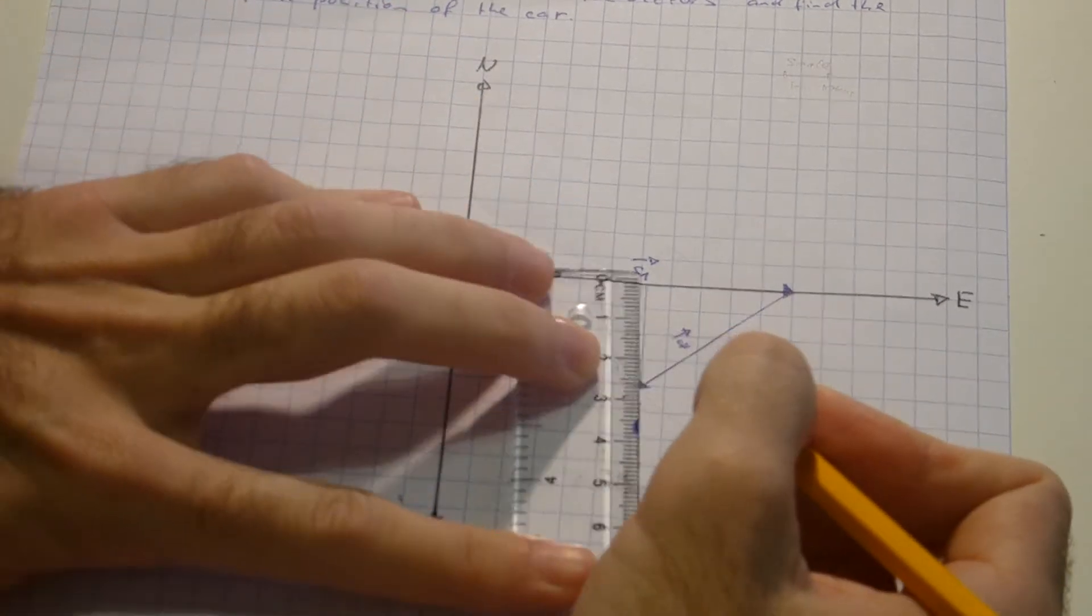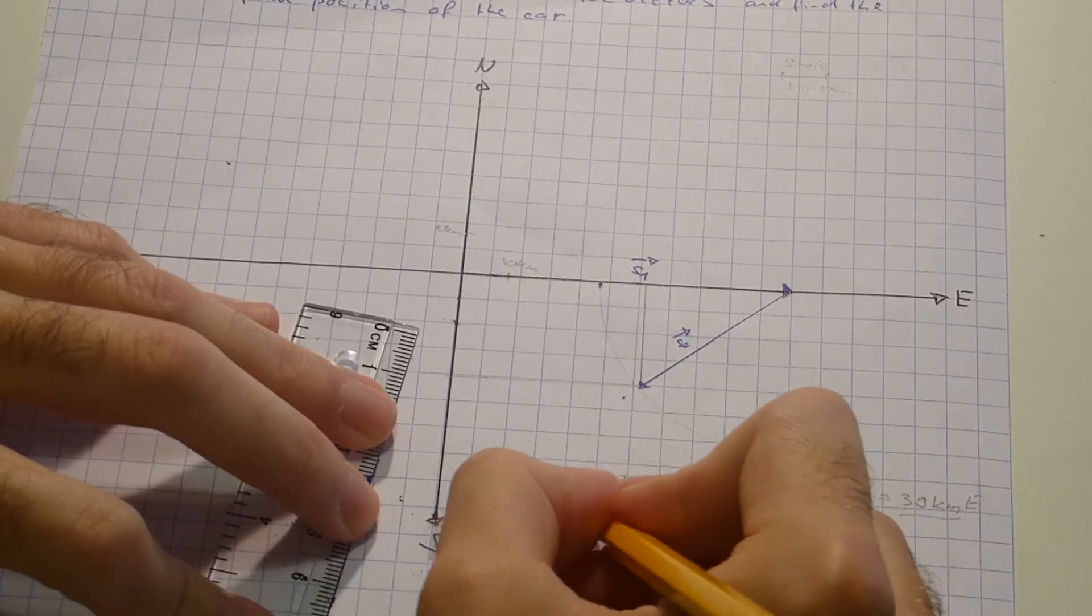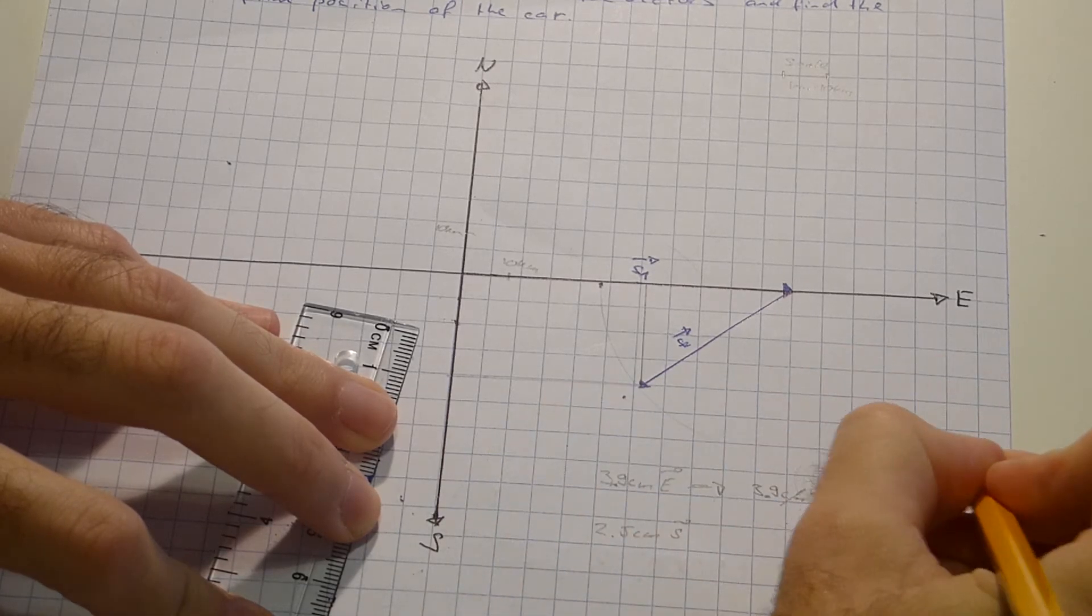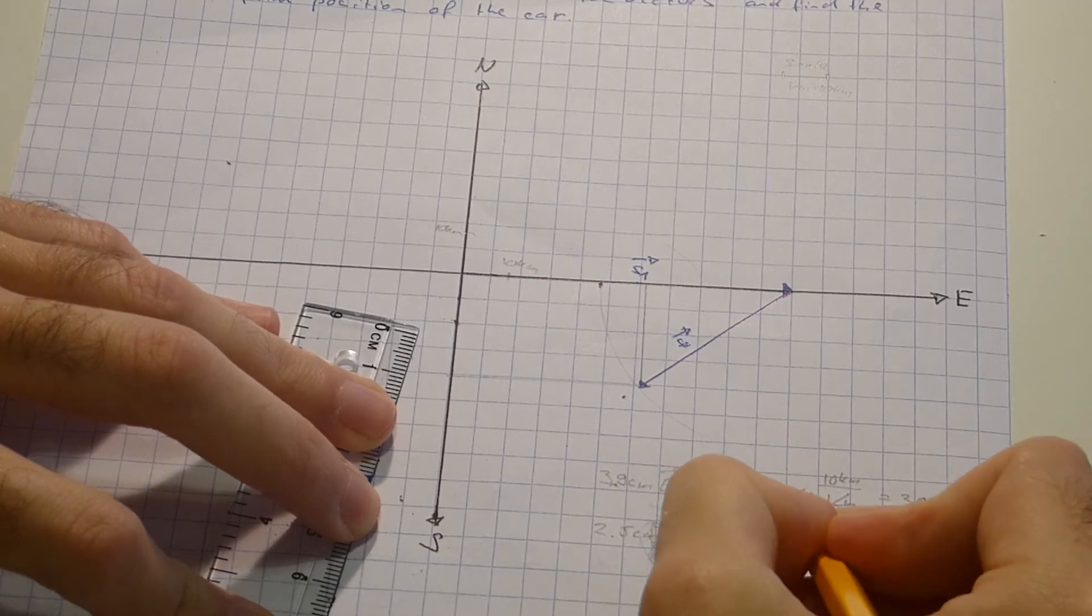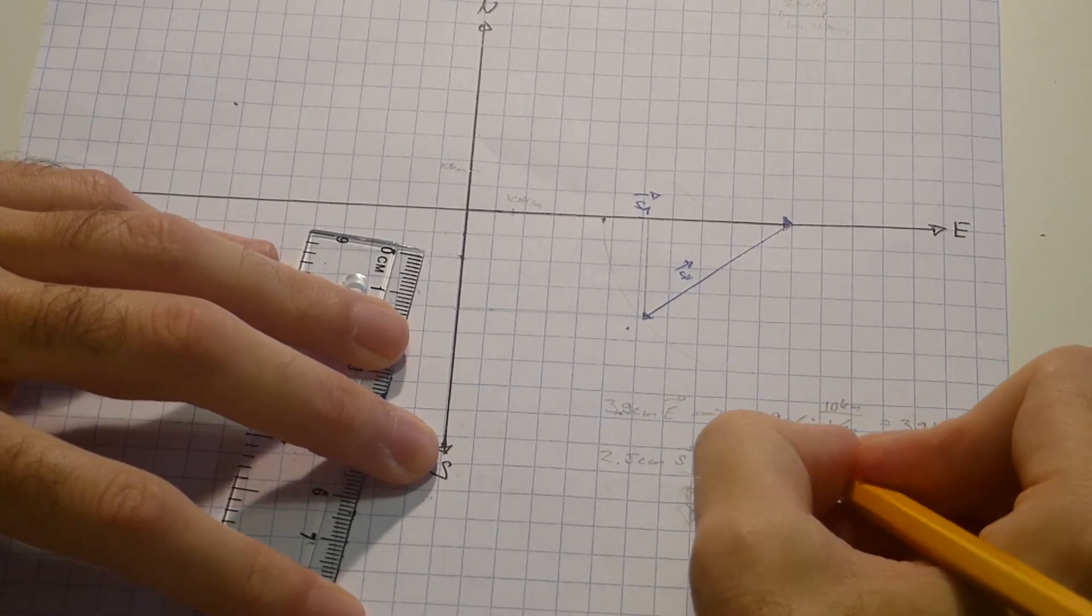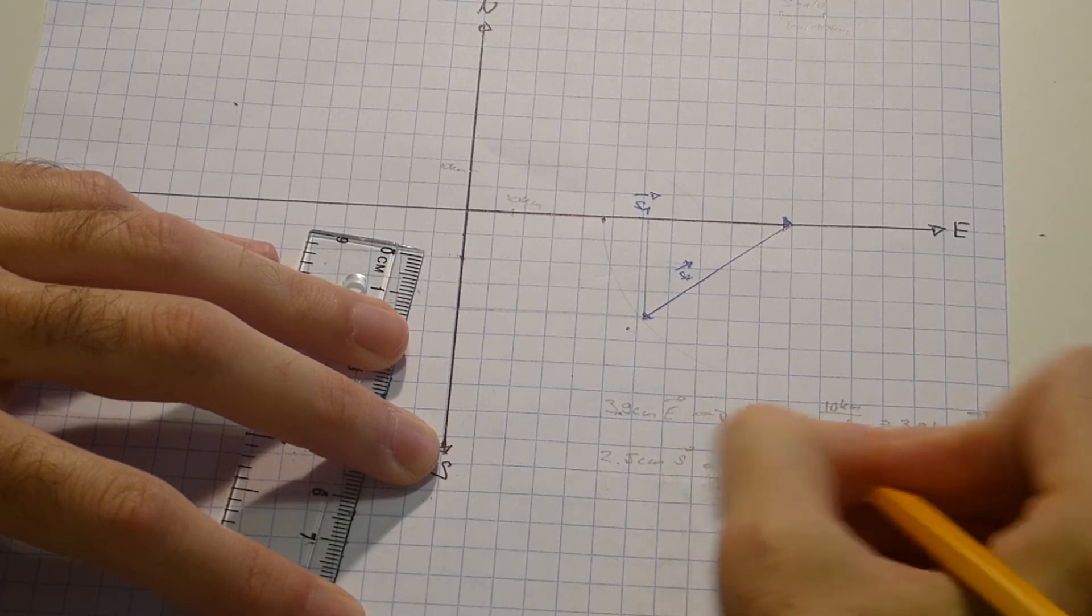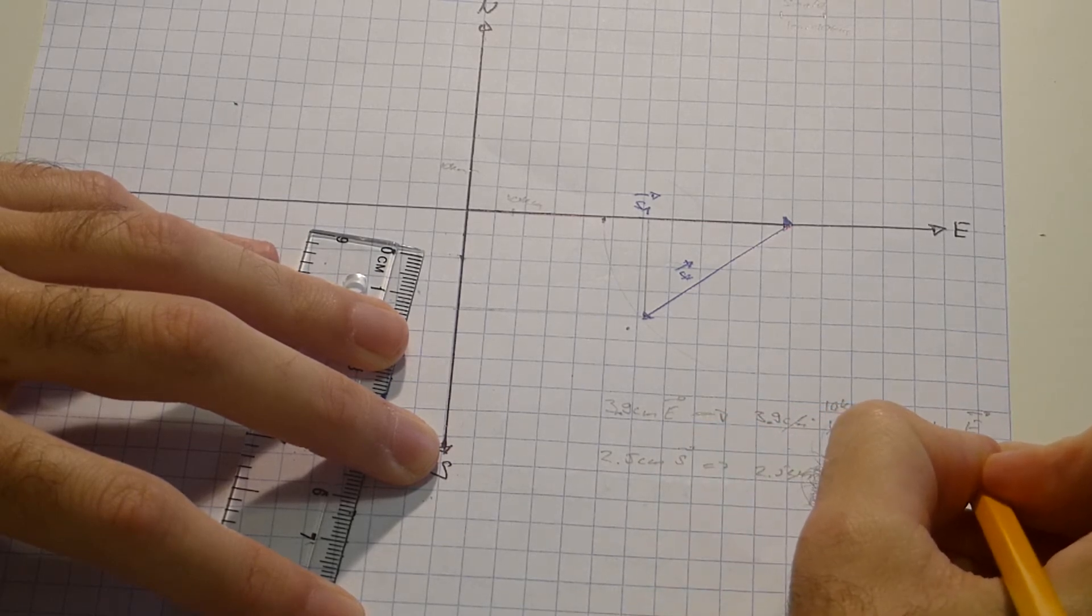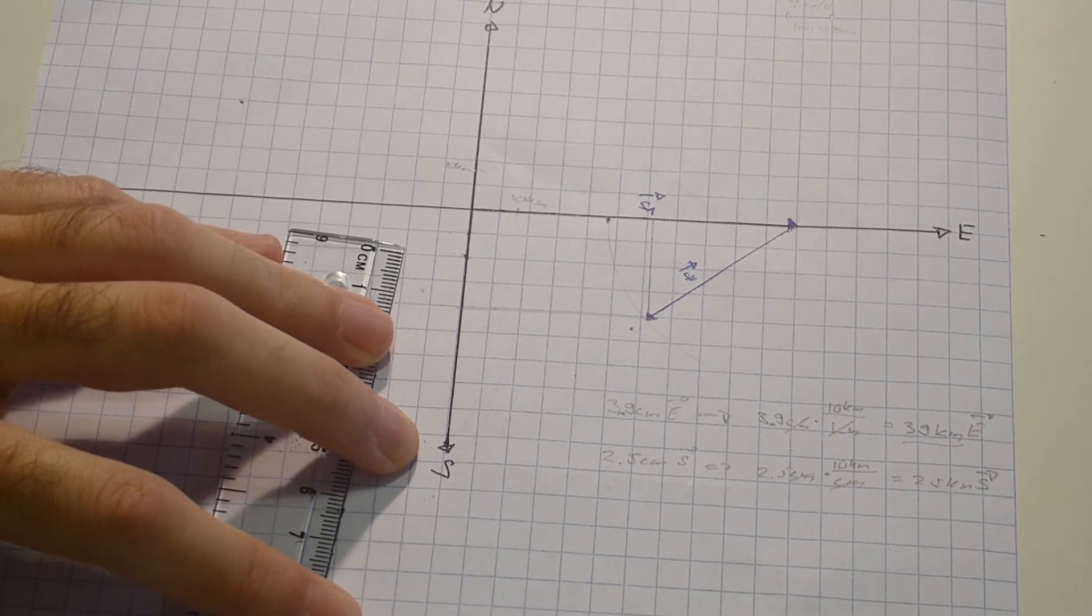And we have 2.5 cm south. Therefore 2.5 cm south times 10 km per centimeter gives 25 km south. Therefore I can state my result.